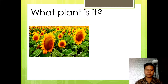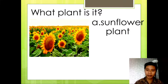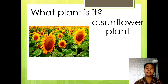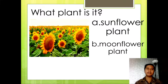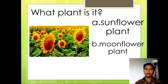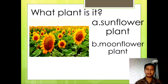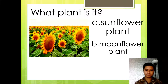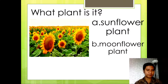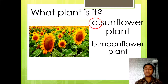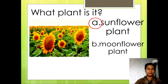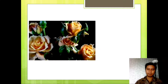Next, question number 3: what plant is it? The choices are Letter A, sunflower plant, or Letter B, moon flower plant. What is the correct answer? Letter A — sunflower plant! Okay, very good.